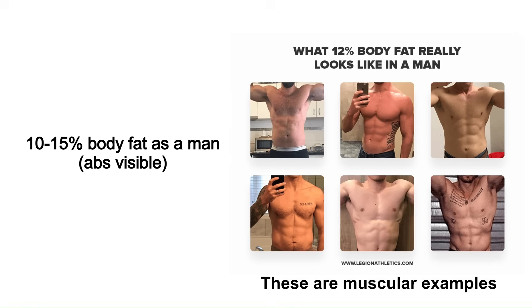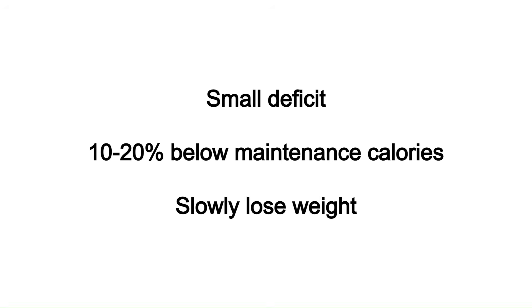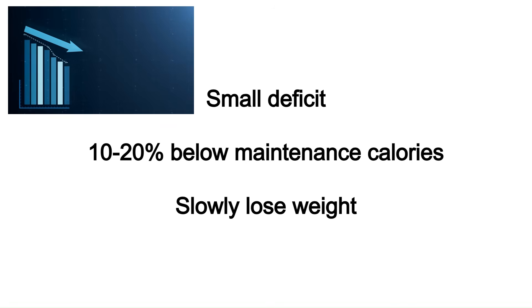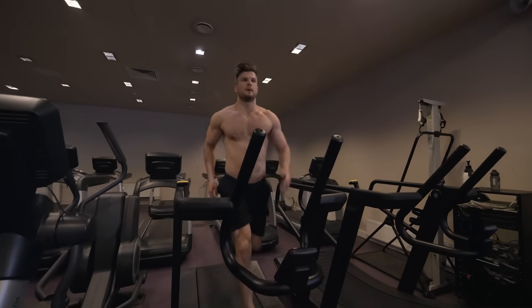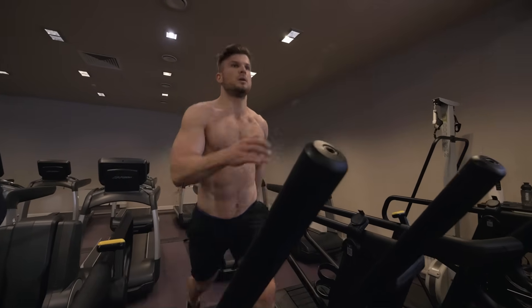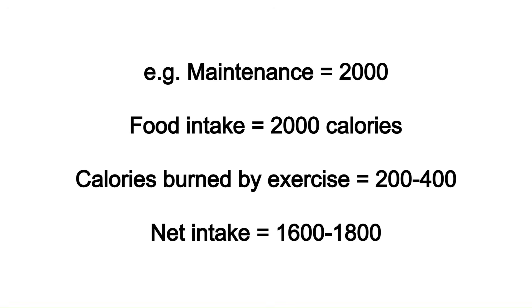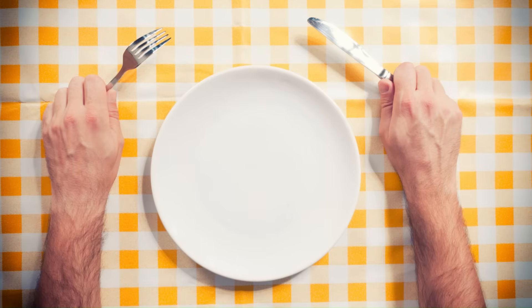To stay at a healthy body fat percentage and maintain leptin sensitivity, you should get to about 10 to 15% body fat if you're a man. If you're losing weight, use a small deficit of about 10 to 20% below your maintenance calories. So if your maintenance is around 2000 calories per day, aim for a net intake of 1600 to 1800 calories. I really recommend doing some cardio to help get into a deficit, since it allows you to eat a little more while still losing weight.